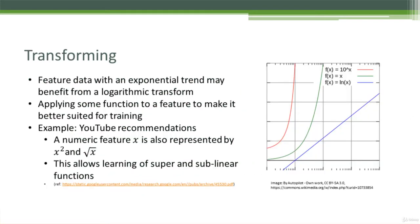Another thing we might do is transforming our data, applying some sort of a function to our features to make it better suited for our algorithms. So for example, if you have feature data that has an exponential trend within it, that might benefit from doing a logarithmic transform on it to make that data look more linear. That might help out your model in actually finding real trends in it. Sometimes models have difficulty with non-linear data coming into it.